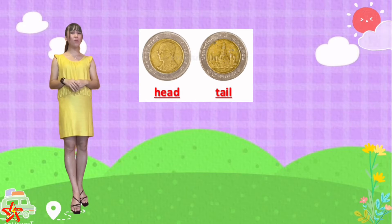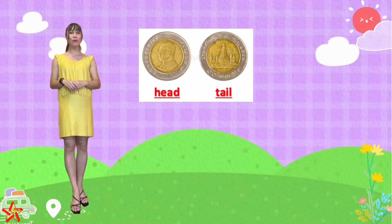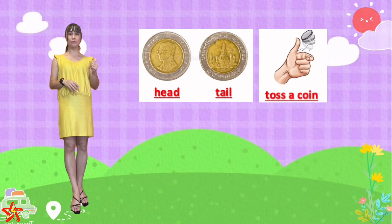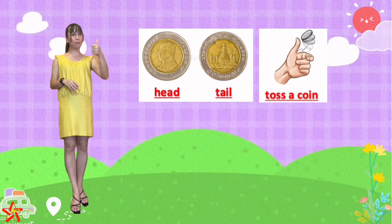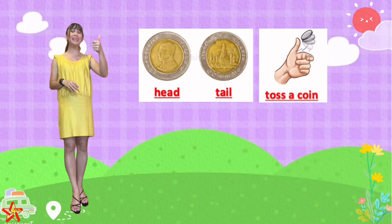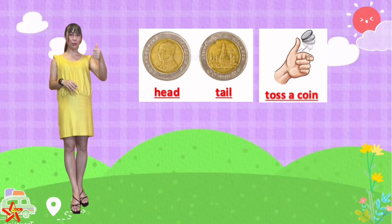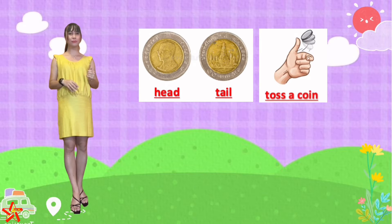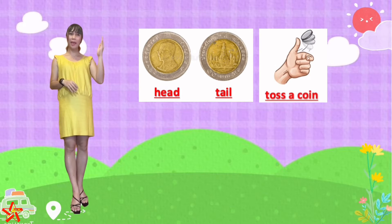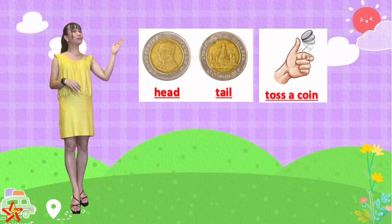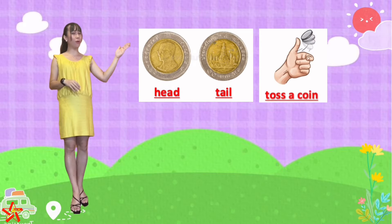Another word that I want you to remember is toss. So when you have the coin, you flip or you toss it up in the air. That is tossing. So can you say toss a coin? We have head, tail, and toss a coin.